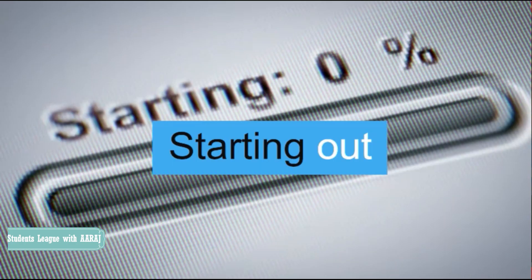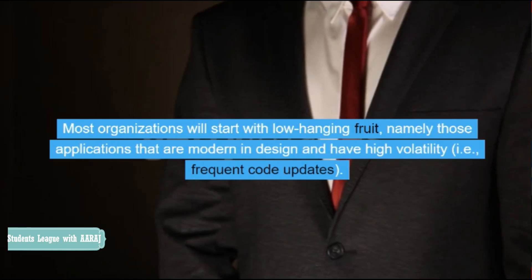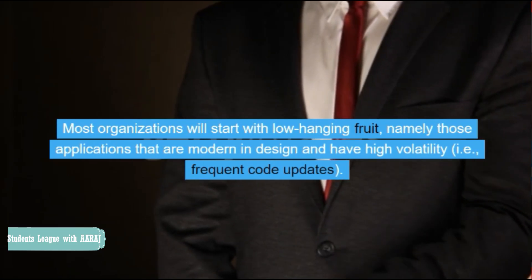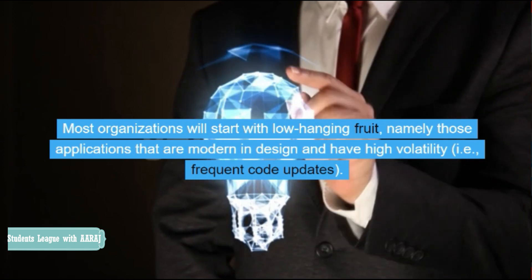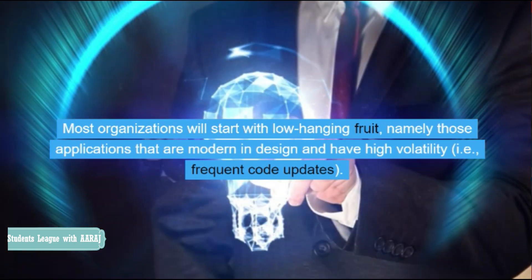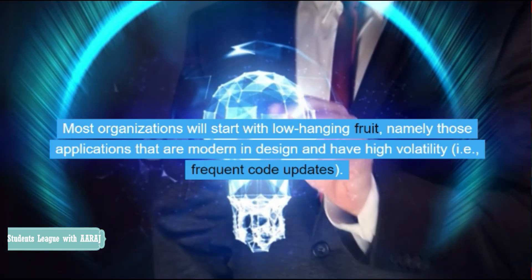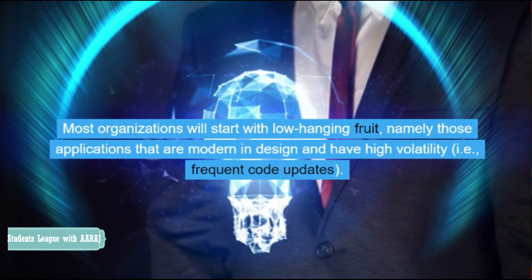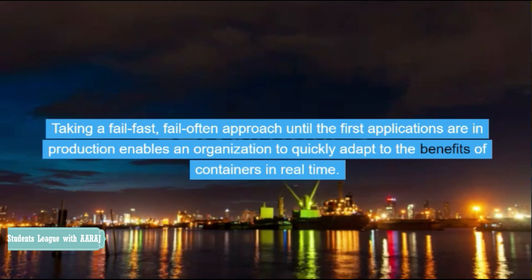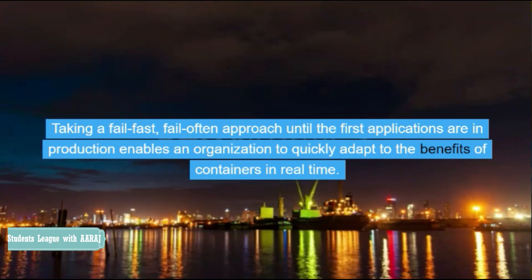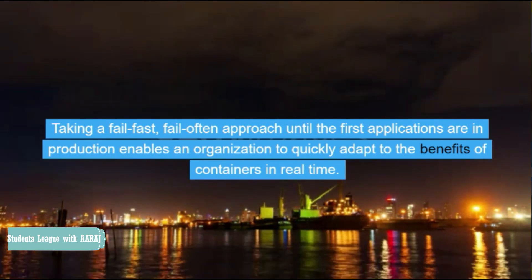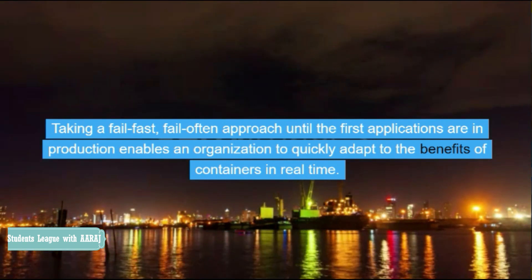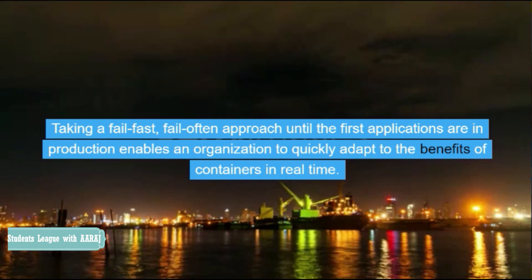Starting out: Most organizations will start with low-hanging fruit, namely those applications that are modern in design and have high volatility, i.e., frequent code updates. Taking a fail-fast approach until the first applications are in production enables an organization to quickly adapt to the benefits of containers in real time.